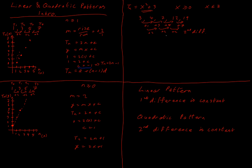So for right now, what we need to know is: a linear pattern is defined as having a first difference — the difference between each term — that is constant. And a quadratic pattern has a second difference that is constant: the difference of the differences is constant. That's really all we need for now. We're going to touch on this in much more detail later.